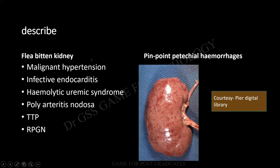Flea bitten kidney is another one. Finally remember what are all the conditions possible. The classical one is malignant hypertension. Endocarditis, quiet hemolytic uremic syndrome. Polyarteritis nodosa. And TTP — rapidly progressive glomerulonephritis. TTP is thrombotic thrombocytopenic purpura. So you are finding pinpoint areas of hemorrhage. And this is a beautiful picture from Pure Digital — it is a fantastic source. I would like you people to all go and benefit from it.